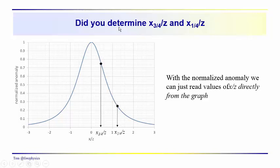Last time around, we wondered if you were able to determine, you know, we could read graphically what the diagnostic position x three quarters over z, x one quarter over z, what they are from this normalized plot.